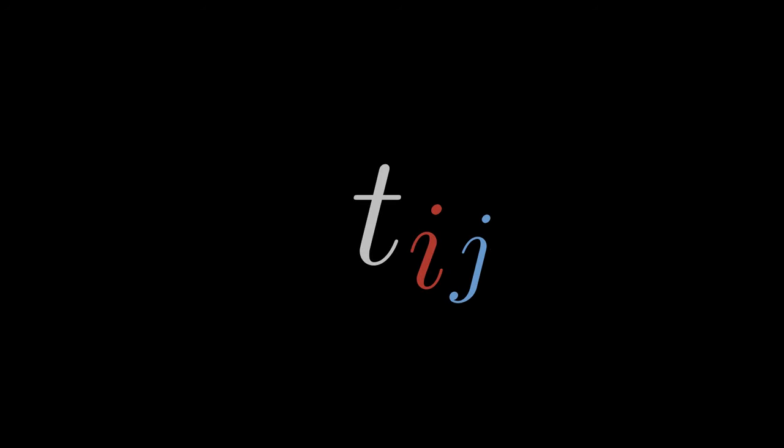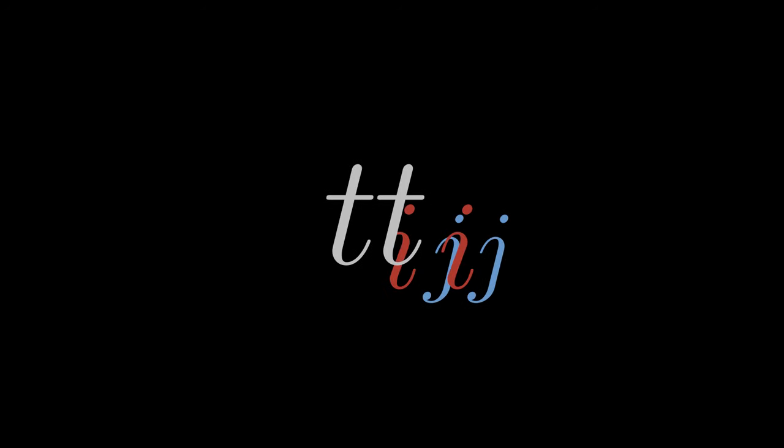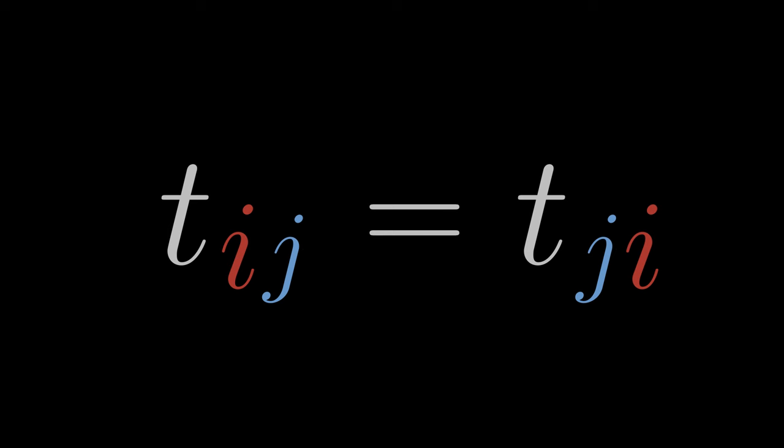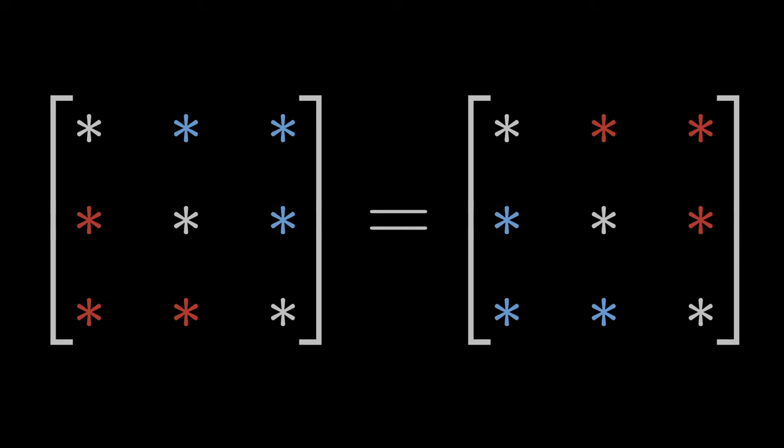A symmetric tensor Tij remains the same if we swap its indices. Specifically, swapping the indices of the second-level tensor as a matrix means that the matrix remains the same if we transpose it, in other words, if we mirror the rows and columns on the diagonal.